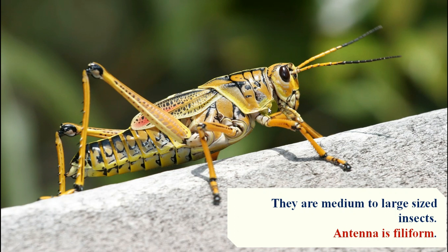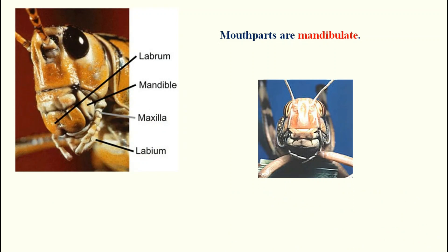The saddle-shaped pronotum is present. The fore and mid legs are ambulatorial (walking type) and the hind legs are saltatorial (jumping type). The fore wings are tegmina and the hind wings are membranous. One pair of cerci will be there. You can write seven to eight points starting from the antenna. They have 10 to 11 abdominal segments.